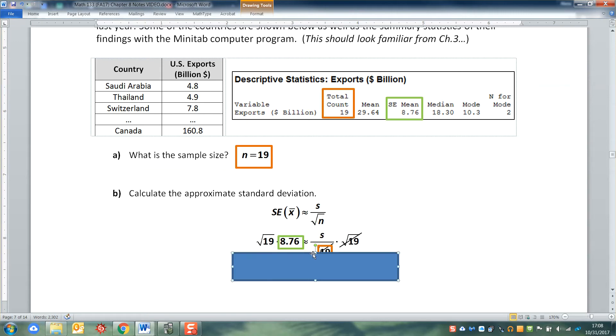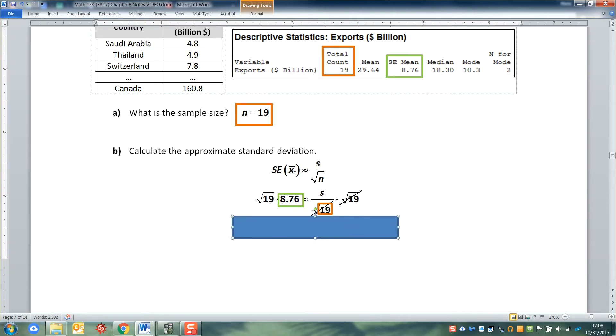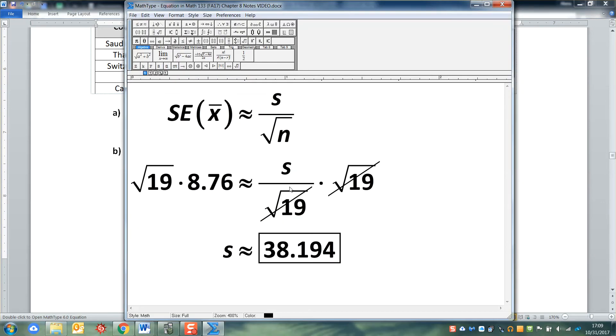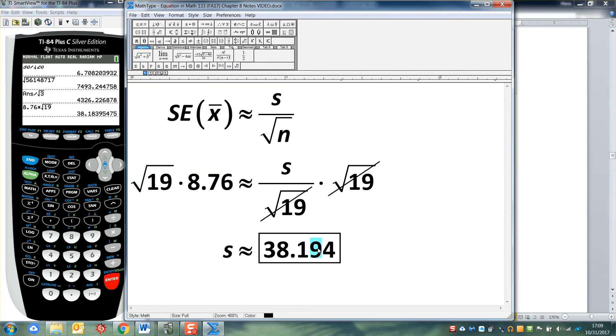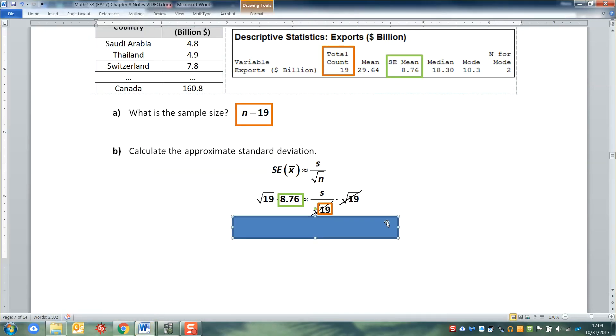And then I could solve it for S. So if you put 8.76 in here on the left and square root of 19 on the right, what happens is you want to multiply both sides by the square root of 19 to make it go away. So when you do that over here on the right, they cancel. But you have to do it to the left-hand side as well to keep the equality. So I grab a calculator and I type 8.76 times the square root of 19, and I get 38.194. And there we have it, there's the standard deviation.